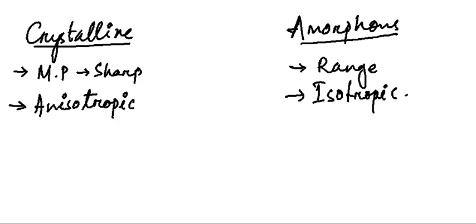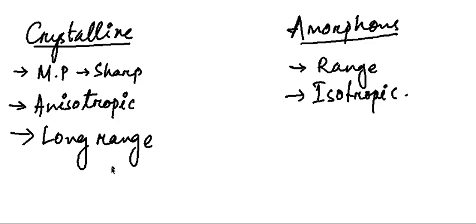The crystalline structure starts with a small repeating unit that keeps repeating itself to form a large crystal, giving it a long range order. Long range order means the crystalline characteristic is maintained over a long range. Amorphous substances have no such repetition of any crystalline structure, so they have only a short range order.